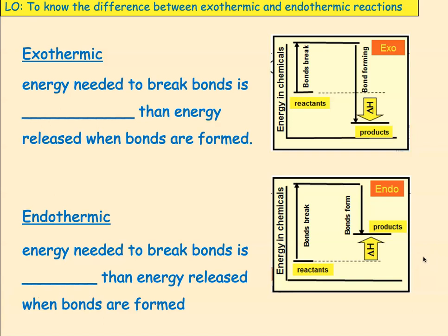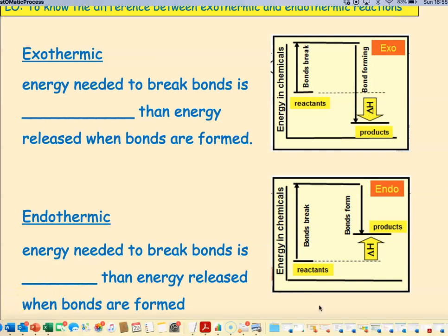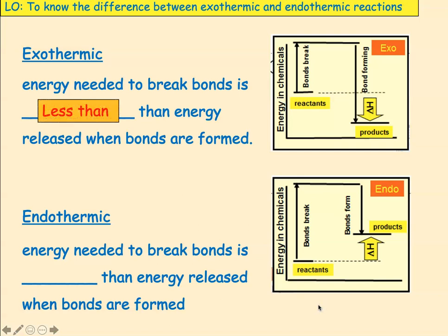Let's complete this. In an exothermic reaction, the energy needed to break bonds is less than the energy released when the bonds are formed. In an endothermic reaction, the energy needed to break the bonds is more than the energy released when the bonds are formed.